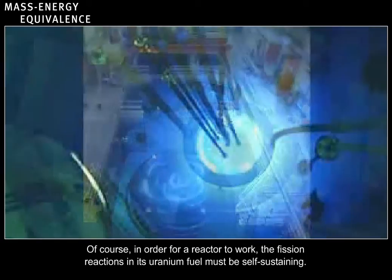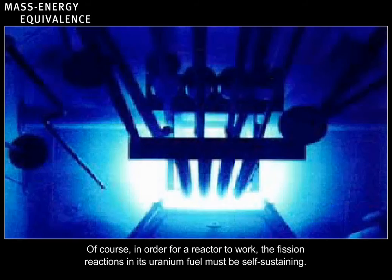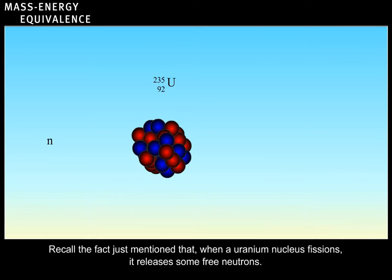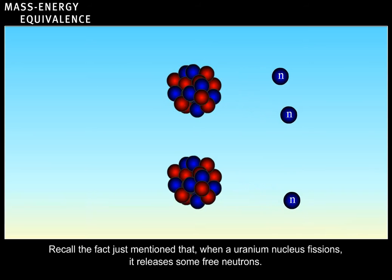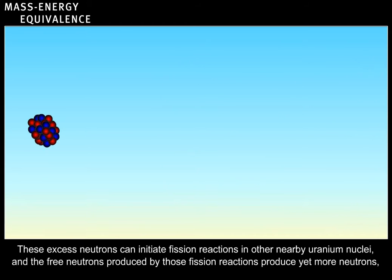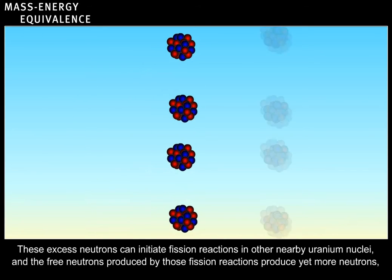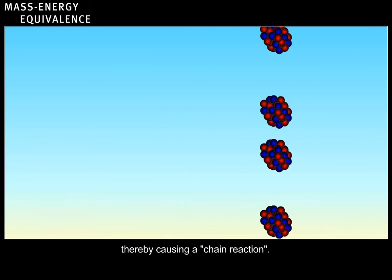Of course, in order for a reactor to work, the fission reactions in its uranium fuel must be self-sustaining. Recall that when a uranium nucleus fissions, it releases some free neutrons. These excess neutrons can initiate fission reactions in other nearby uranium nuclei, and the free neutrons produced by those fission reactions produce yet more neutrons, thereby causing a chain reaction.